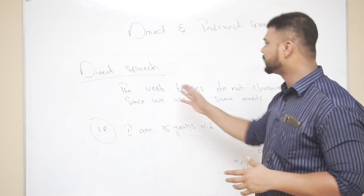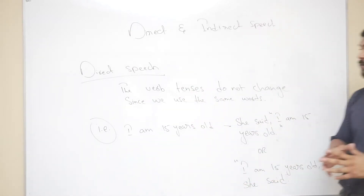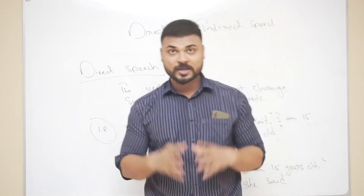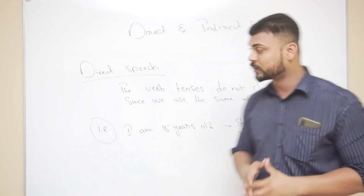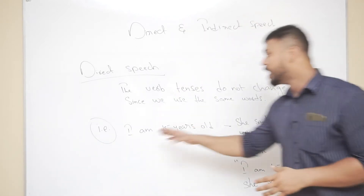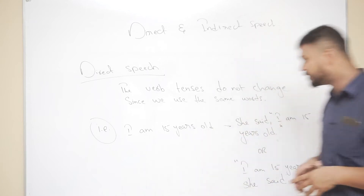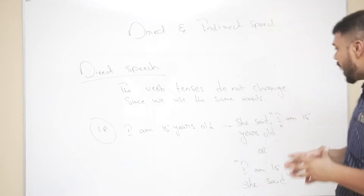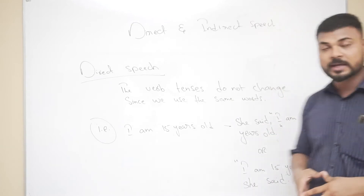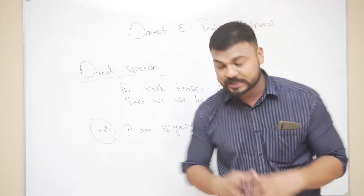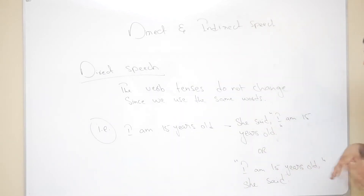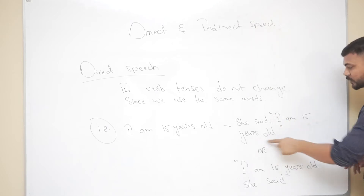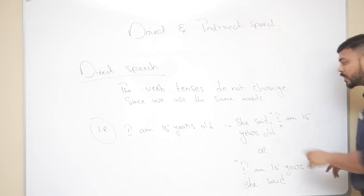Now we'll look at some examples. As you can see, the word tenses do not change since we use the same words. So remember, when forming direct speech, the same tense will be used. For example: 'I am 15 years old.' If the speaker is she, it becomes: She said, 'I am 15 years old.' Or you can also say: 'I am 15 years old,' she said. Remember, the quotation marks cover the words of the speaker — the entire sentence 'I am 15 years old' is in quotation marks.